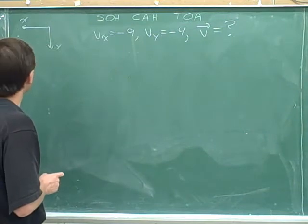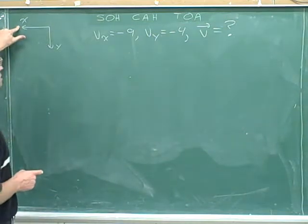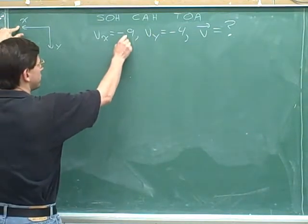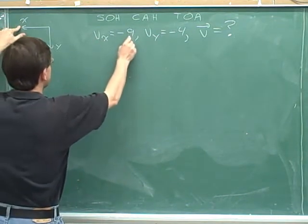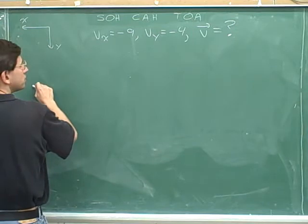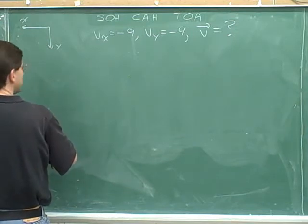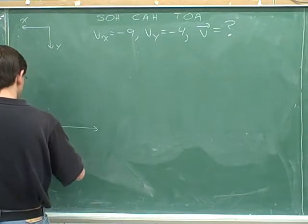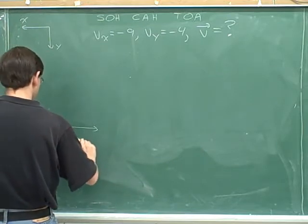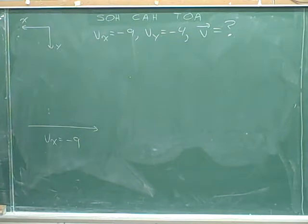Which way is the x component pointing? Well, the positive direction is left, but the x component is negative. So it's pointing to the right. If positive is left and you're negative, then you're pointing to the right. Always be very careful to get your arrows correct and be careful with your positive directions.